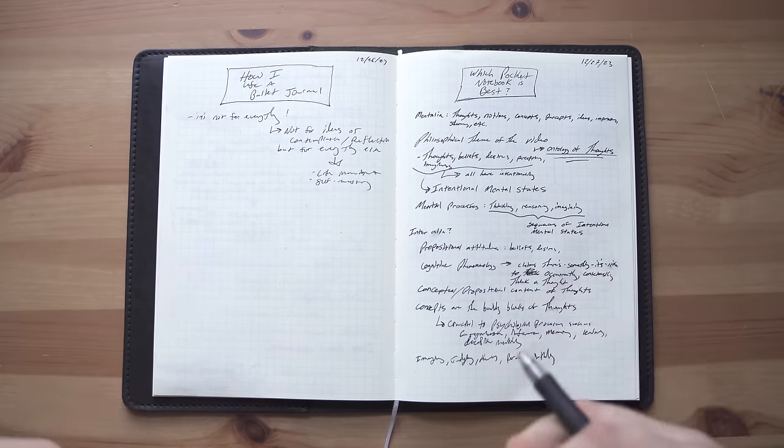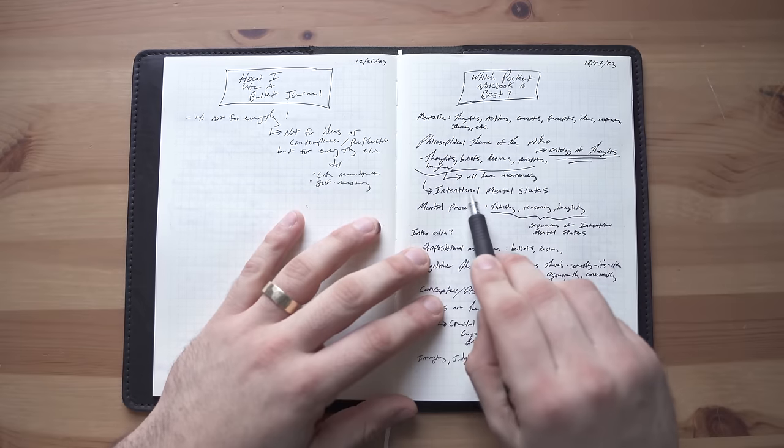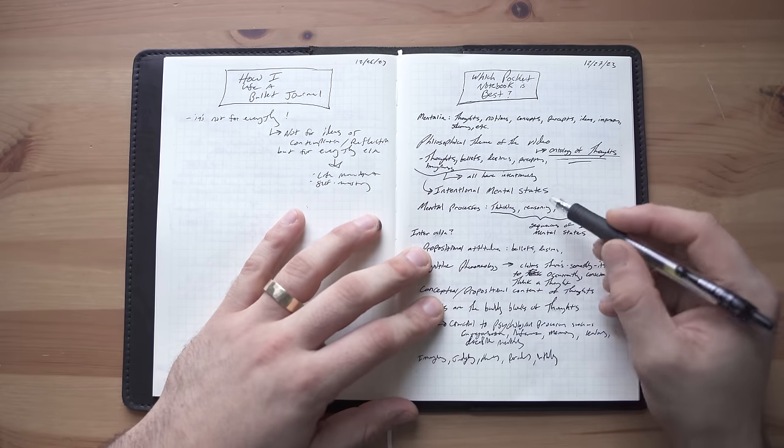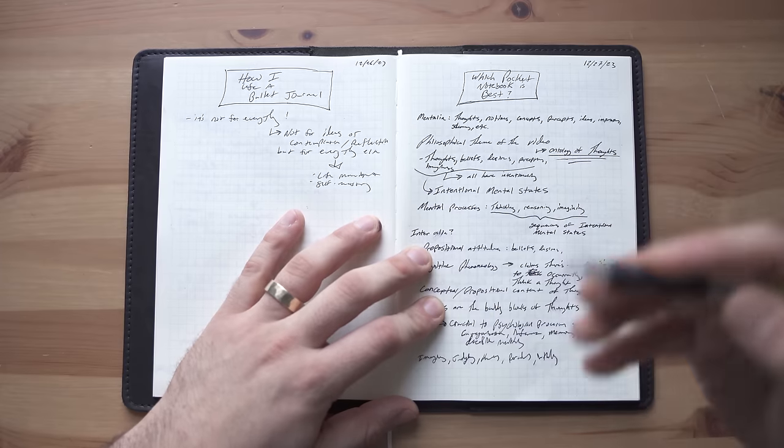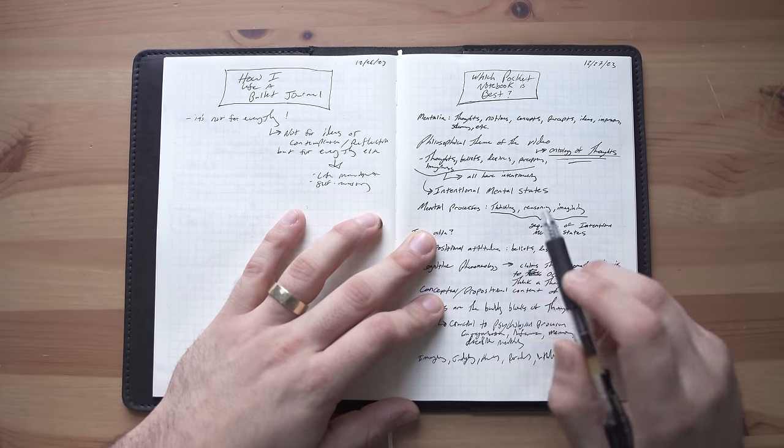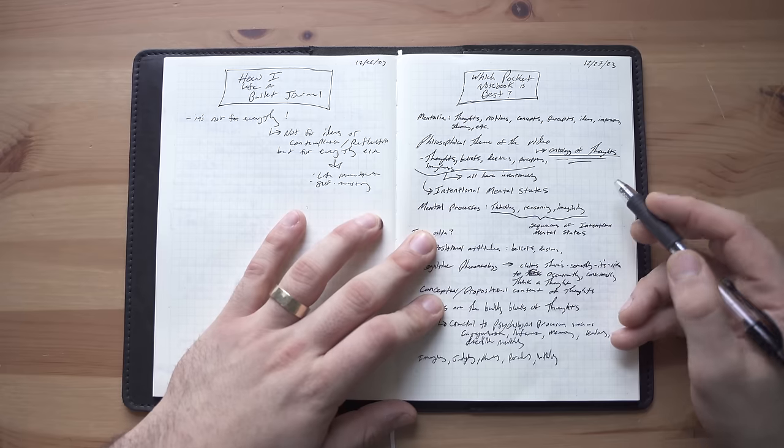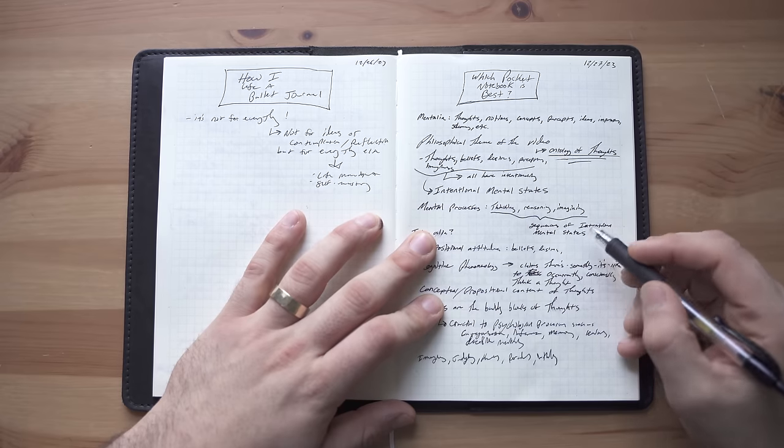Now, it's debatable whether all thoughts or all mental states are intentional or not, but intentional means directed. It means they have intentionality. They're about something. And so these are mental processes, which include thinking, reasoning, imagining, and are all sequences of intentional mental states.